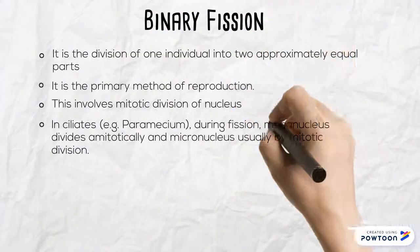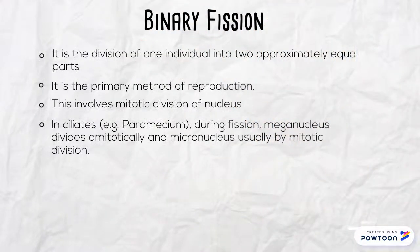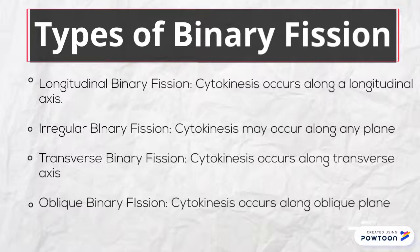Binary fission is a division of one individual into two approximately equal parts, and is the primary method of reproduction. It involves methodical division of the nucleus. There are four types of binary fission: longitudinal, irregular, transverse, and complete.